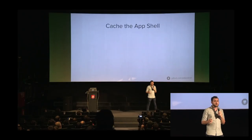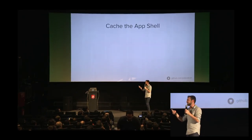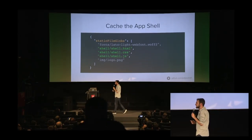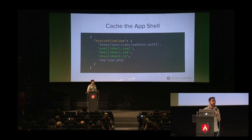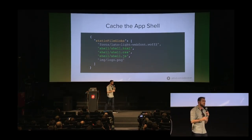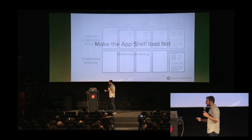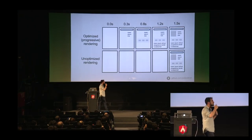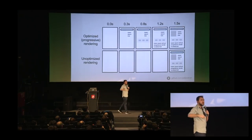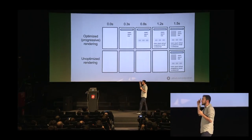If the app shell takes five seconds to load, there's no point in having one. How do we cache it? Using sw-precache — we pre-cached shell.html, shell.css, and shell.js. That's how we pre-cache the app shell: the first time the app opens those resources are cached, and on the next visit everything is already in cache. The interesting question is how to make it load fast — the answer is progressive rendering, or optimized rendering. Unfortunately, almost half of the web uses unoptimized rendering.